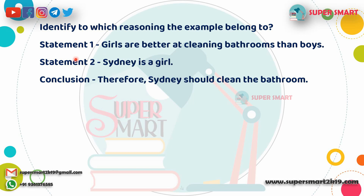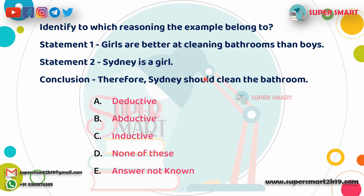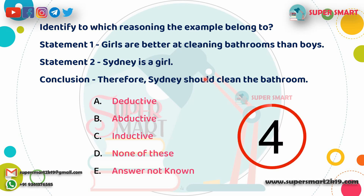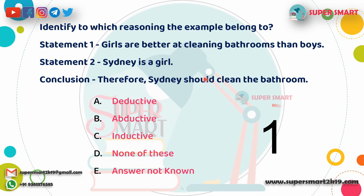First question: You can get a conclusion from two statements. What type of reasoning is this? Statement 1: Girls are better at cleaning bathrooms than boys. Statement 2: Sydney is a girl. Conclusion: Therefore Sydney should clean the bathroom. Options: deductive, abductive, inductive, or none of these. Answer: Deductive reasoning.